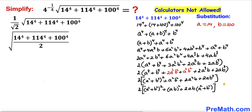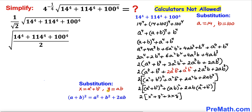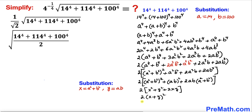Between the last two terms I factor out 2ab, giving 2ab(a² + b²). Now let me make another substitution: let x = a² + b² and y = ab. The expression inside the bracket becomes x² + 2xy + y², which by the identity (a + b)² becomes (x + y) whole squared.